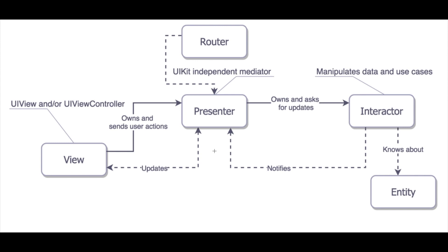For one thing we have a View, a Presenter, an Interactor, a Router, and an Entity. The View is the class that has all the code to show the app interface to the user and get their response. Upon the response, the View alerts the Presenter.